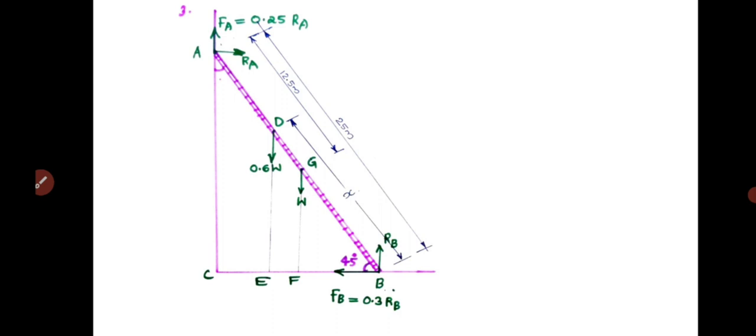Taking moments: algebraic sum of moments about point B equals zero. The moment due to FA is FA times BC, which is clockwise. RA times AC is also clockwise. 0.6W times BE is anti-clockwise. W times BF is also anti-clockwise. We need to calculate distances AC, BC, BE, and BF.